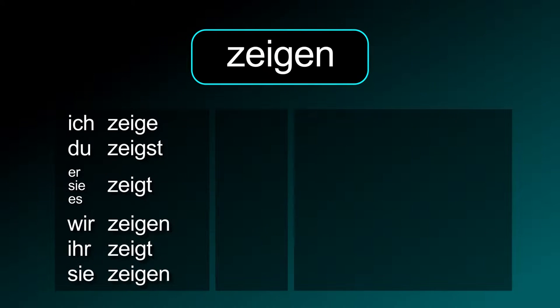Zeigen conjugation. Ich zeige, du zeigst, er, sie, es zeigt, wir zeigen, ihr zeigt, sie zeigen.